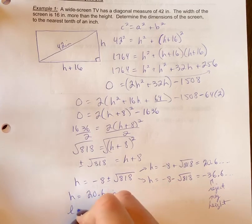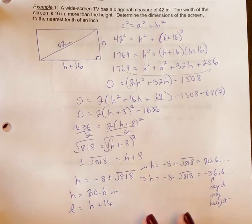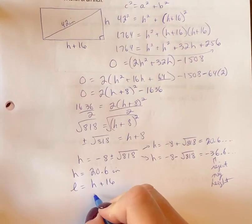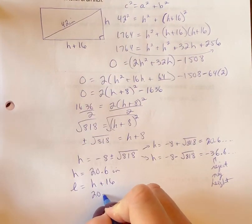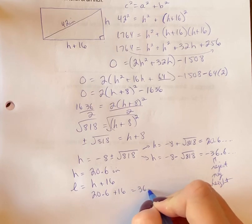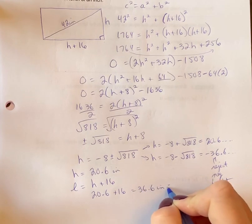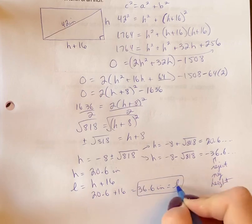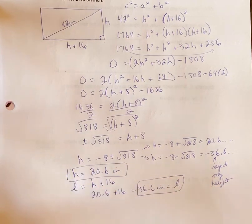Your length is h plus 16. So that would mean 20.6 plus 16. So your length would be 36.6 inches. So that's your length. Just so it's clear, that is equal to L. That is equal to your height.